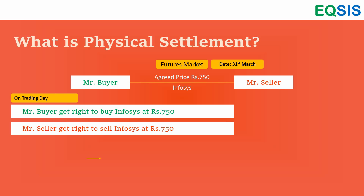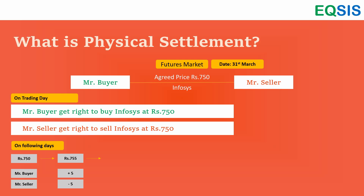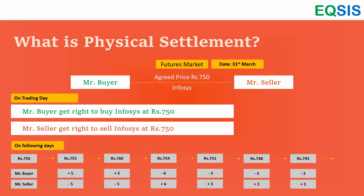So what happens on following days? Once we make a deal, if the price increases, me being the buyer I am benefited. I got the right to buy the asset at 750. If the price becomes 755, I can still take the product from you at 750, so I am indirectly benefited by those five rupees. Without this contract I would have to pay 755. That five-rupee difference is adjusted by the exchange on a day-to-day basis to avoid counterparty risk — we call that MTM. As the price becomes 760, another round of five rupees comes from your account.